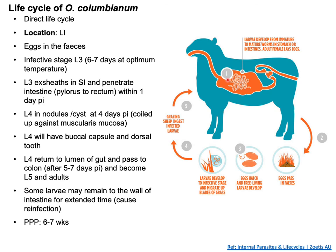When the ingested grass reaches the small intestine, the L3 larvae penetrate the wall of the intestine and migrate within it, causing an inflammatory response. This leads to nodule formation in the intestinal wall. Within the nodule, molting occurs from L3 to L4. Since some nodules are suppurative, the L4 larvae continue migrating through the intestinal wall, producing new nodules. Eventually some L4 larvae find their way to the lumen of the large intestine, where molting from L4 to L5 occurs and they become adult parasites. Completion of the life cycle takes approximately six to seven weeks.